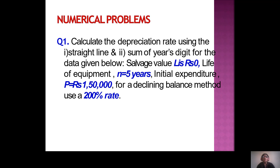Next problem: calculate the depreciation rate using straight line and sum of years digits for the data given. Salvage value is zero, life of equipment N = 5 years, initial expenditure is 1,50,000, using declining balance method at 200%. Find the depreciation rate for straight line method and sum of years digits.